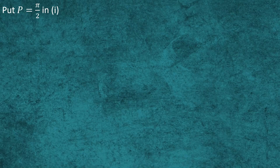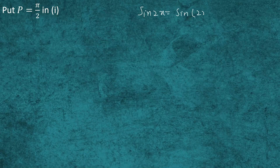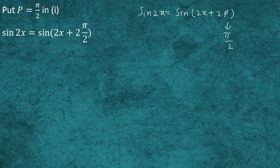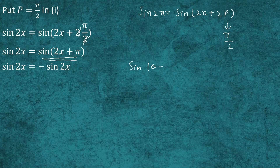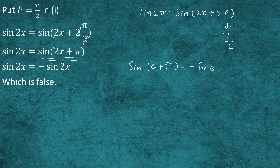We first test p = π/2 in expression 1, which is sin 2x = sin(2x + 2p). Replacing p with π/2: sin 2x = sin(2x + 2·(π/2)) = sin(2x + π). The right-hand side becomes −sin 2x, since sin(θ + π) = −sin θ. So sin 2x ≠ −sin 2x, meaning the function has not repeated itself. Therefore p = π/2 is not the least period of the given function.